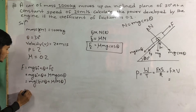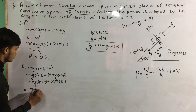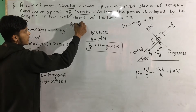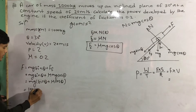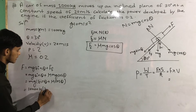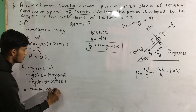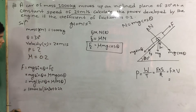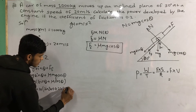Now we substitute the values. Mass is 1000 kg, g equals 10 m/s², sin theta with mu 0.2 and cos theta are substituted for the 30 degree angle.